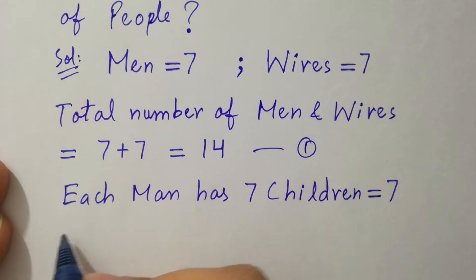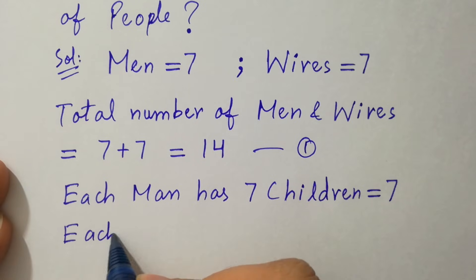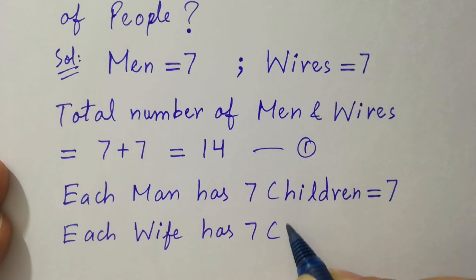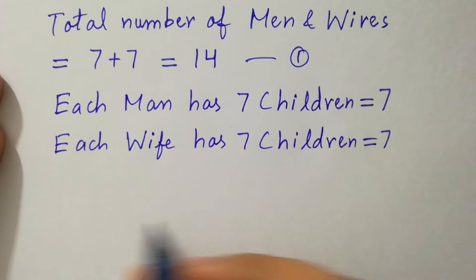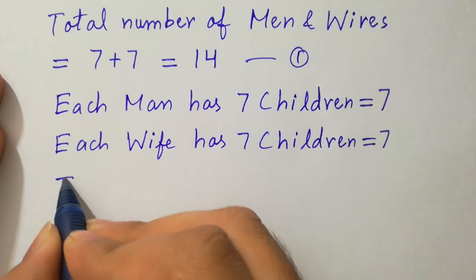And each wife has seven children. Then total number of children will be equal to seven times seven, which is forty-nine.